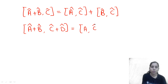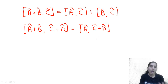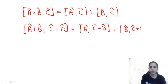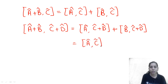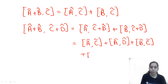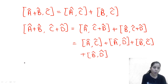Even if it is [A+B, C+D], you write it as [A, C+D] plus [B, C+D], then expand further to [A,C] plus [A,D] plus [B,C] plus [B,D]. If there is a negative sign, just put the negative sign in between. That's how you get the simplified form.